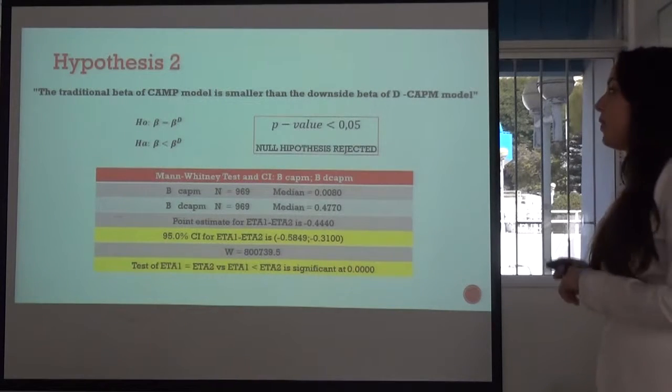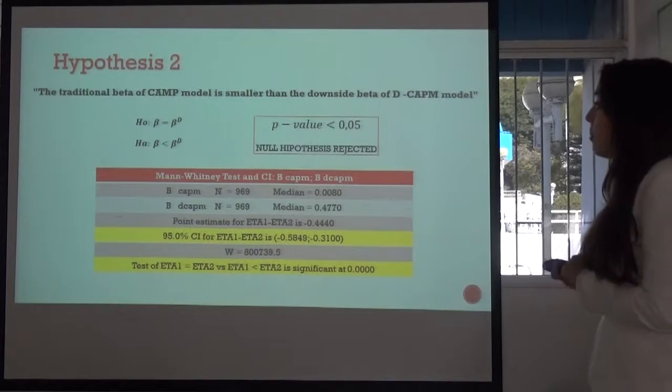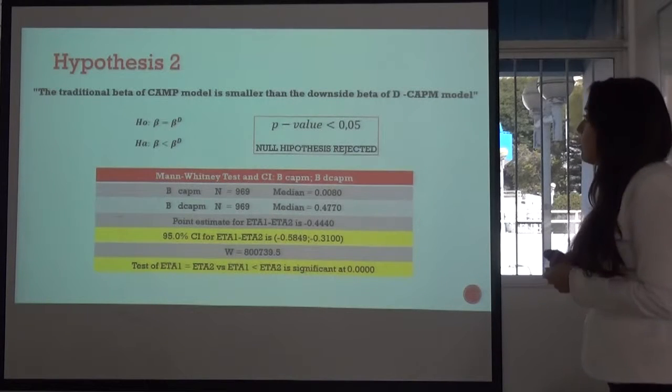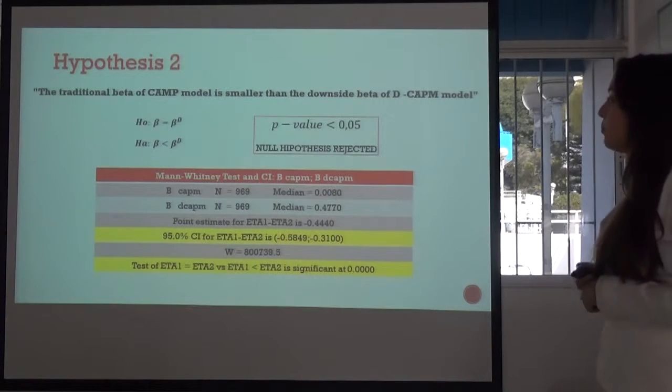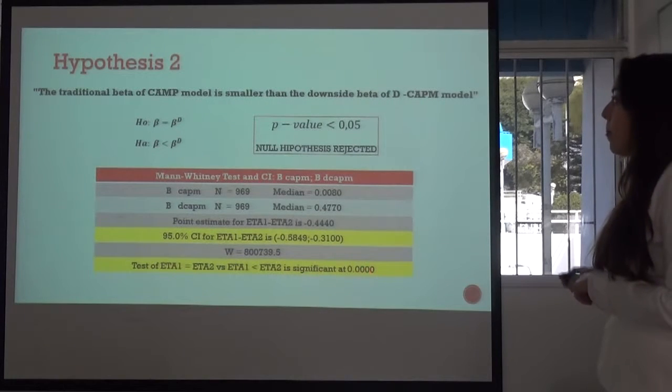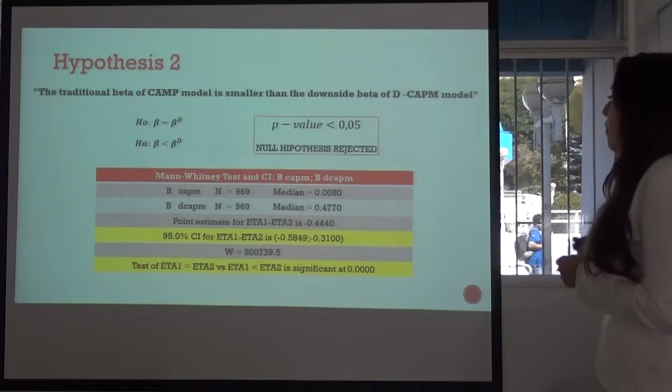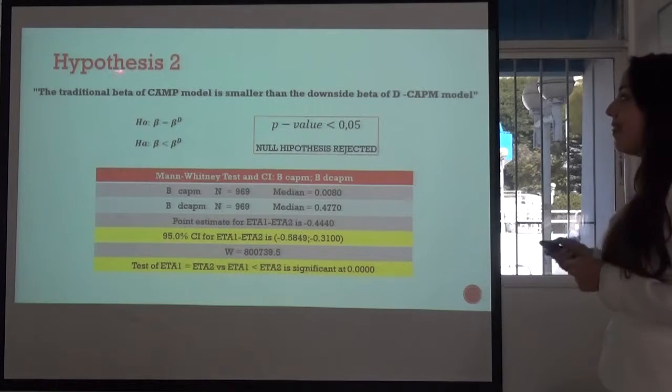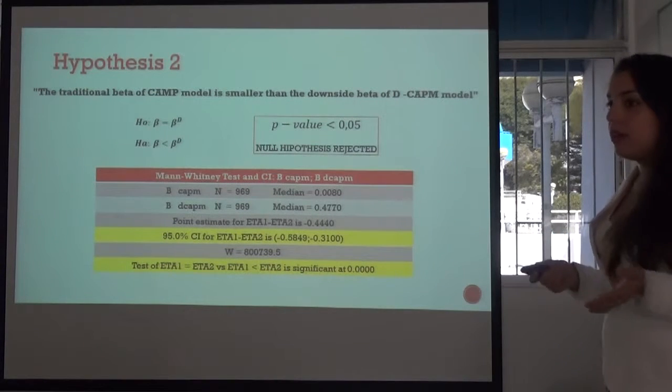Hypothesis two. The traditional beta of CAPM model is smaller than the downside beta of DCAPM model. And this is the Mann-Whitney test. And with a p-value lower than the level of trust, the null hypothesis is rejected and the second hypothesis is accepted.